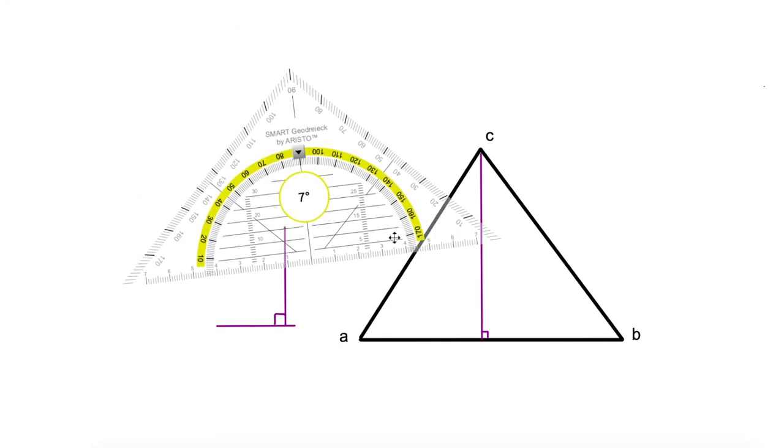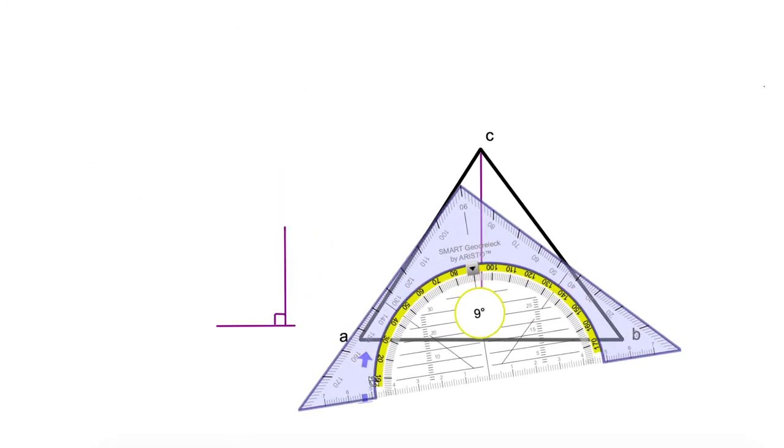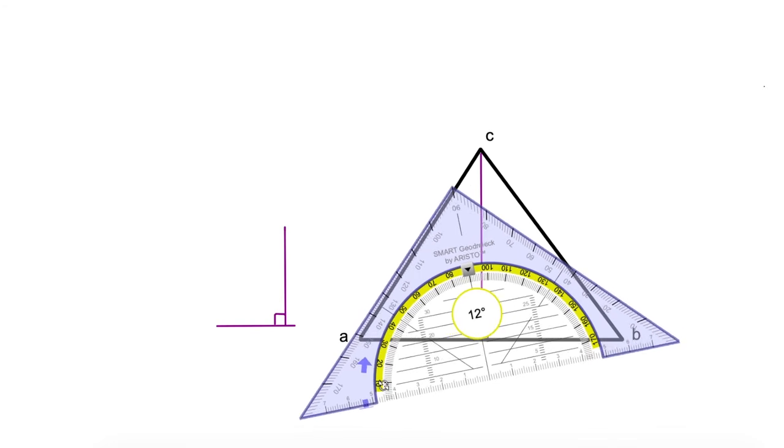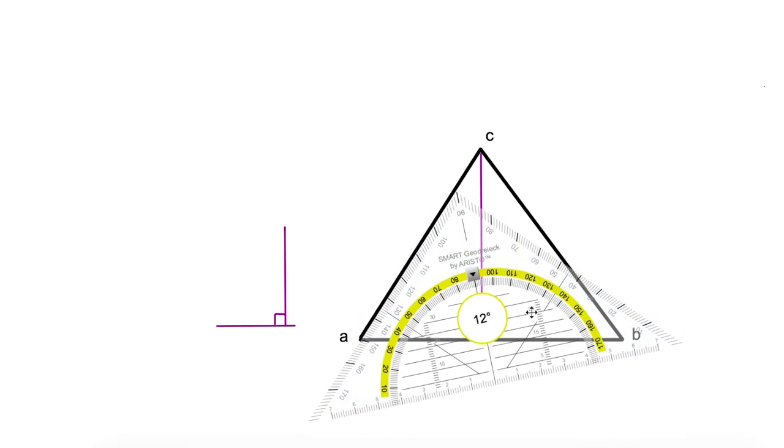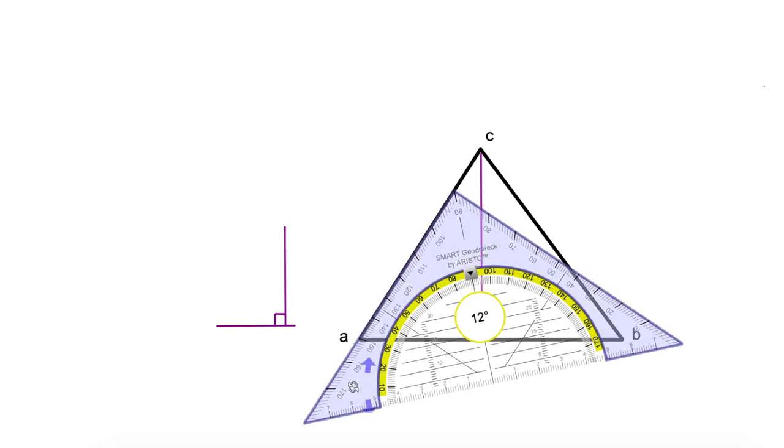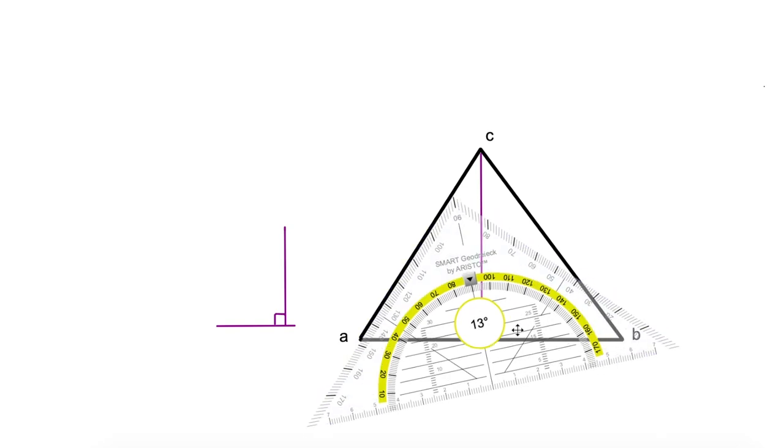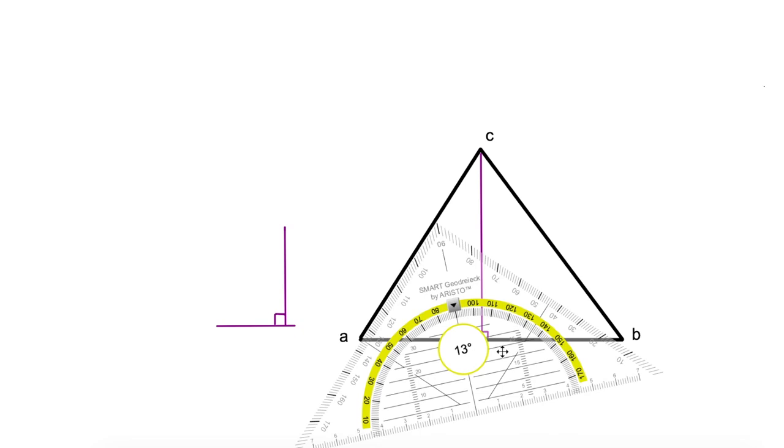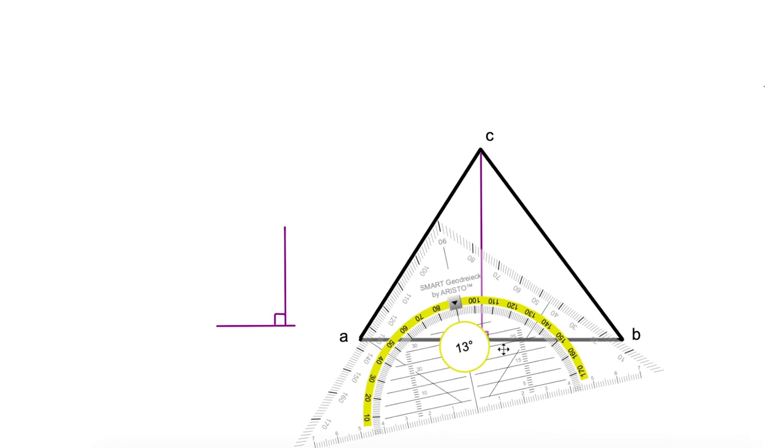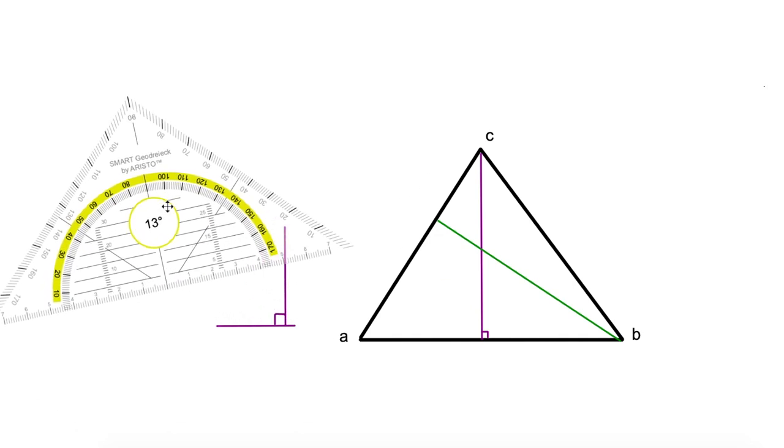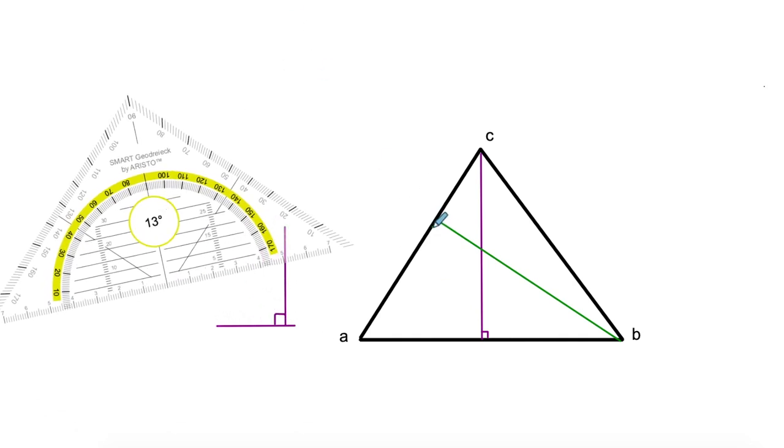Now we are going to draw the altitude of segment AC. We have to make sure that we position our square ruler perfectly on that segment. Again, I could draw a 90-degree angle from anywhere on that segment, but we want it to go through the opposite vertex, which in this case is point B. So once I have perfectly aligned my square tool, I'm going to draw a line that is perpendicular to segment AC and goes to point B, which is the opposite vertex. And here we have the second altitude of this triangle.